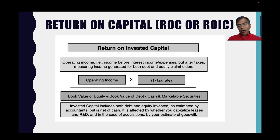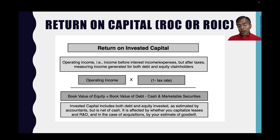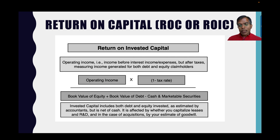In the denominator, you take the book value of equity right off the balance sheet, plus the book value of debt — interest-bearing debt as well as leases, whatever you counted as debt in your cost of capital — minus cash and marketable securities. That's the invested capital. Return on invested capital is a composite measure of what a company is making on its existing projects.